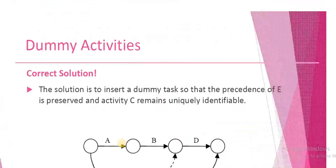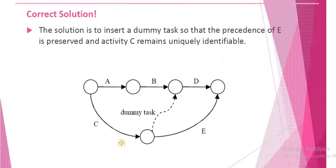This situation is also not valid. So what will be the solution? The solution will be to add a dummy activity. The valid solution is to insert a dummy task or dummy activity so that the dependency of E is preserved and activity C remains uniquely identifiable.